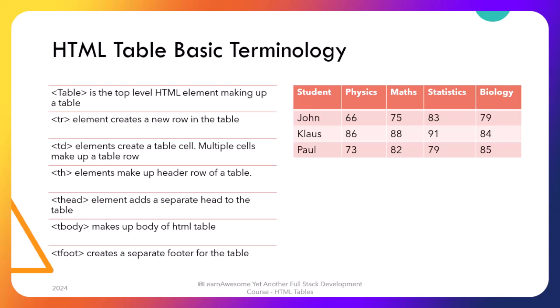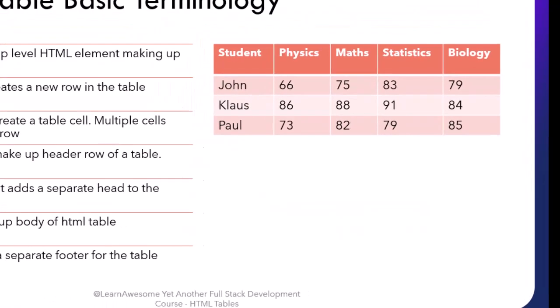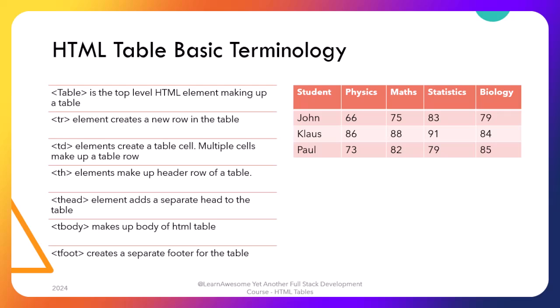THead is the first of that class and acts as a logical container for the top row or rows that contain information about table columns — just like the first row we said would only have TH elements. Using THead, you would move that row over to the content section of a THead element. The header can comprise multiple header rows. Using our earlier student results example, the header can have two rows — the top one indicating core versus elective classification for courses, and the second header row containing individual course names.